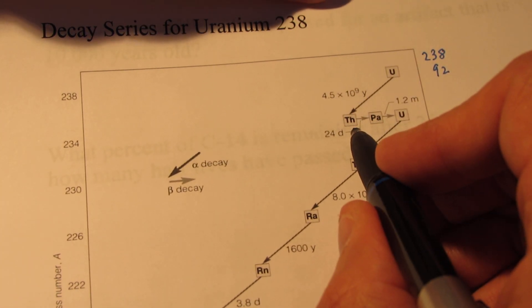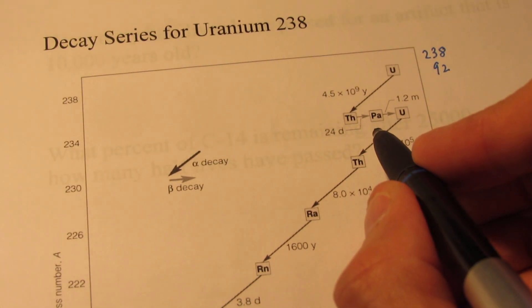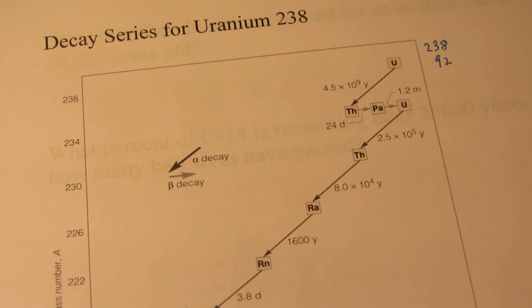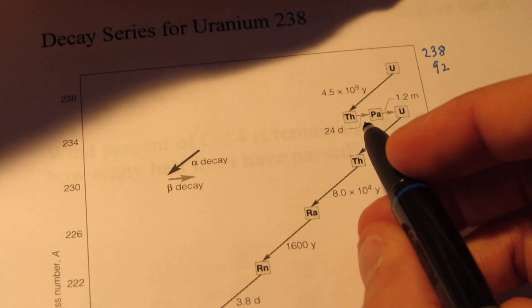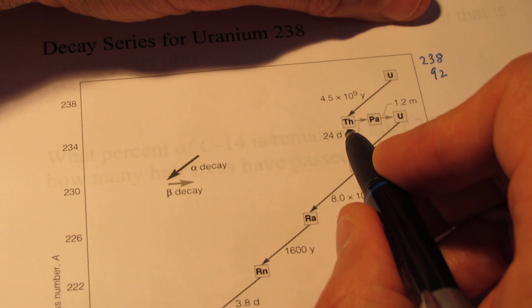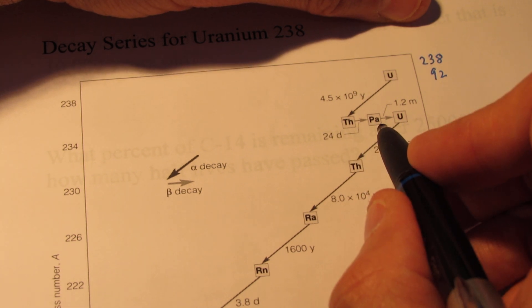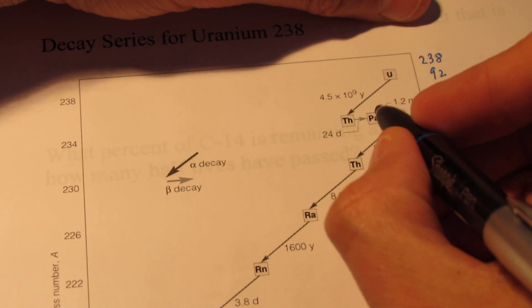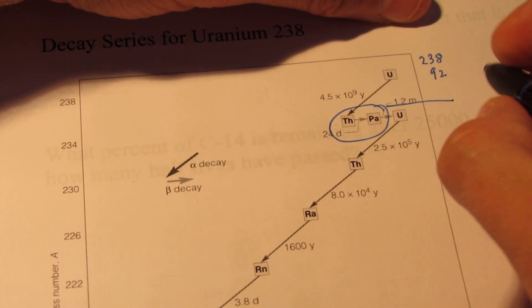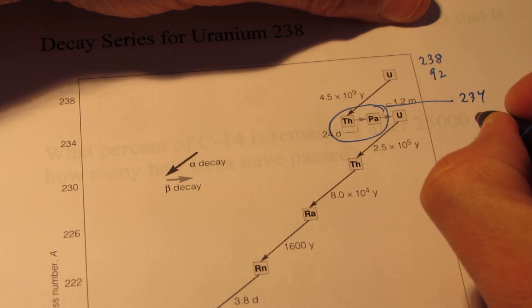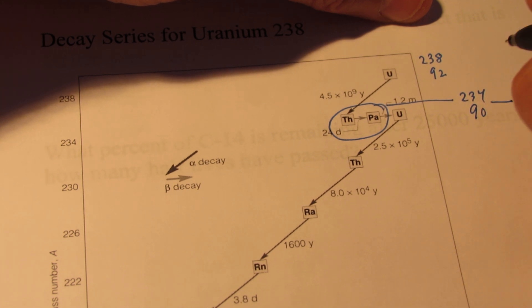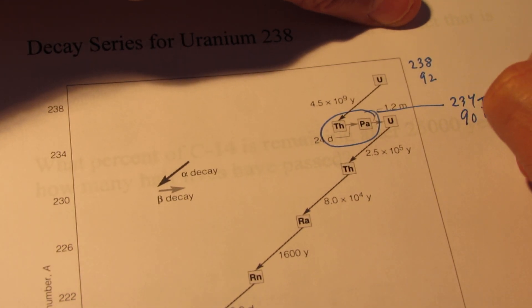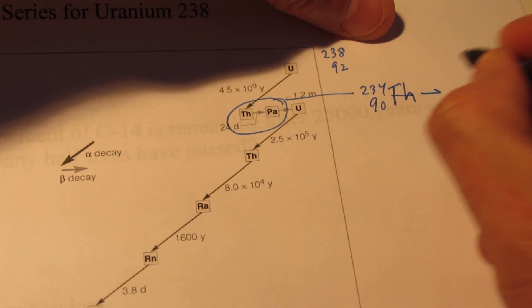Now thorium-234 transmutates into PA. What is PA? Well, PA turns out to be protactinium. The time it takes for one half of a sample of thorium-234 to decay into protactinium-234 is 24 days. Let's magnify that process: 234 over 90 thorium. I made a little mistake, so that's thorium, sorry about that.